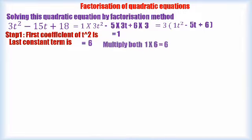Then multiply 1 × 6 = 6. The thing is, we are going to get -5 by adding the two numbers. Step 2. What is the coefficient of t?